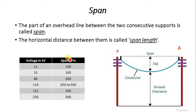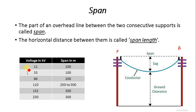In case of 11 kV, the span is nearly about 100 meters. For 33 kV it is also about 100 meters. As the transmission voltage increases, the span length also increases.